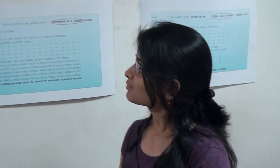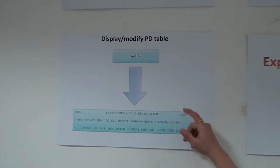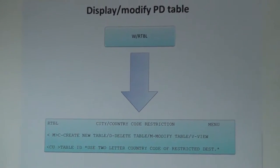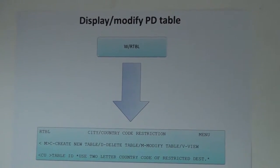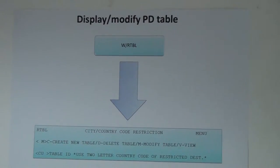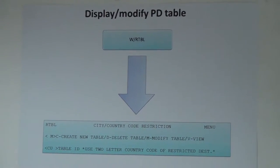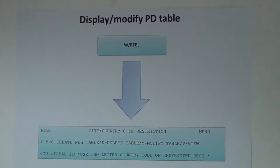Now, this table uses mask functionality. A mask is a formatted screen display which helps the user to input data without having to remember transaction formats or entries. The entry for displaying this table is W/ARTICLE. The user can create a table for a particular country, display the existing table, or delete or update the table.